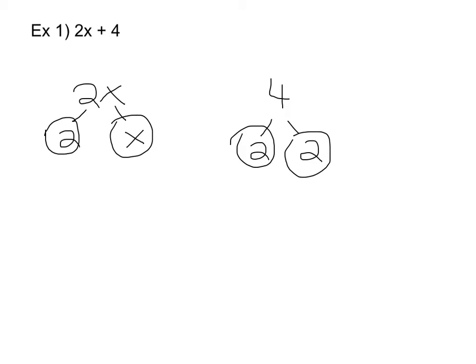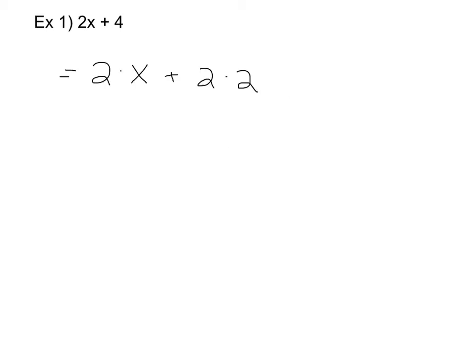What I mean by that is simply to write the 2x as 2 times x and the 4 as 2 times 2. You are always going to write all of your terms in its prime factors.